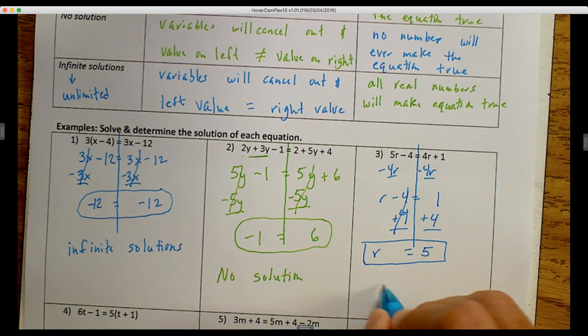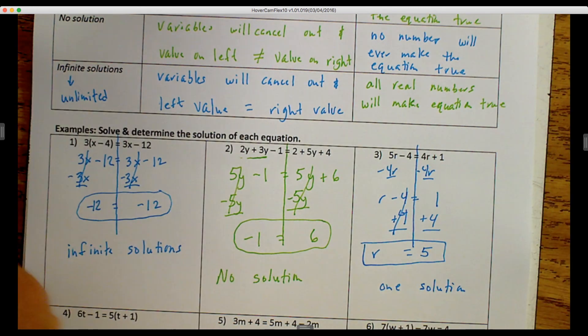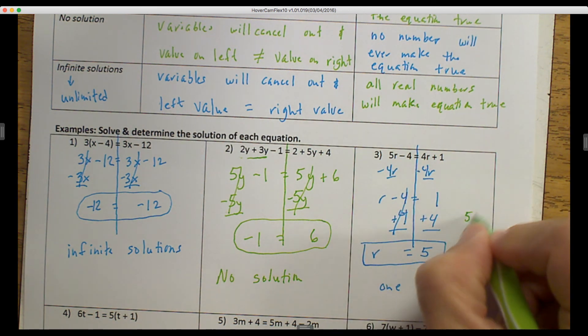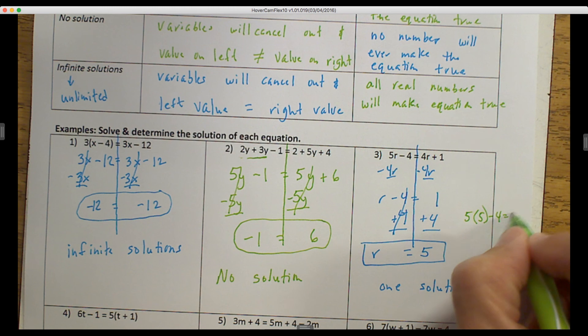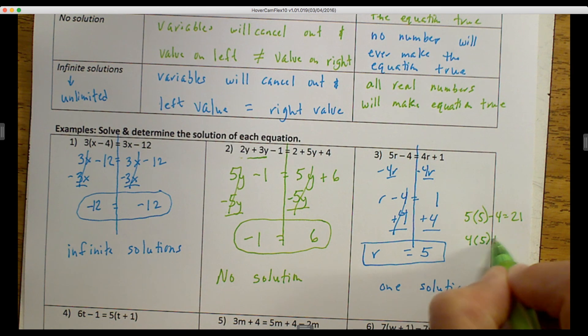Now in this case, there is one solution, and the solution is 5. So 5 is the only number, when we plug it back in, that would make this statement true. And that would be how you check your work. So I'll do that right here on the side. If I were to plug 5 in for r, that would be 5 times 5 minus 4, and that would equal 25 minus 4 is 21. And then on the other side, 4 times 5 plus 1 would equal 21 as well. So they both equal 21.